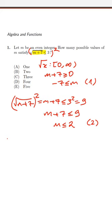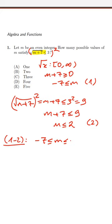...-7 ≤ m ≤ 2, and m must be an even integer. So m must be -6, -4, -2, 0, and 2.